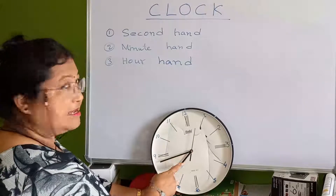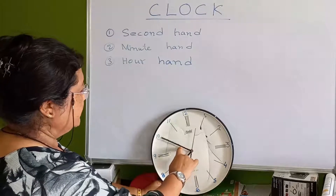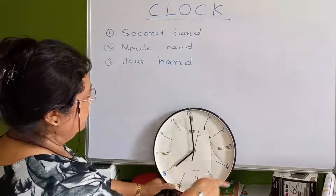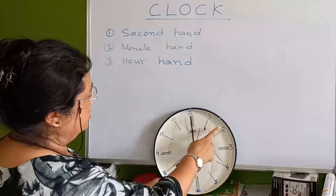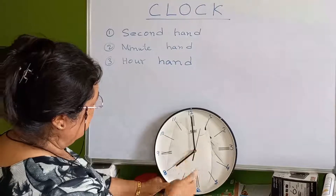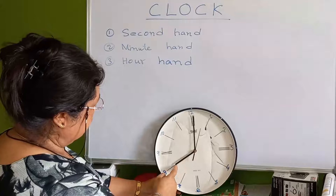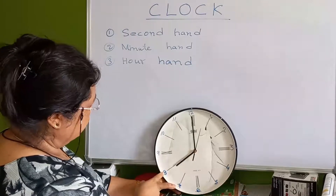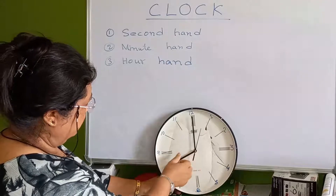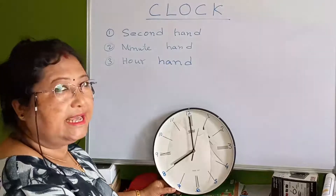Now the minute hand is at 12. On our clock we have 12, then 1, 2, 3, 4, 5, 6, 7, 8, 9, 10, 11, 12. When the minute hand is at 12, the hour hand is at 8 — that means the time is 8 o'clock.